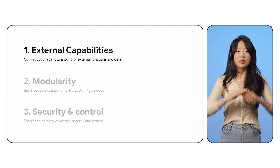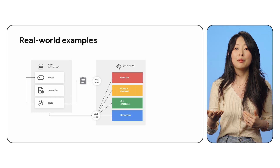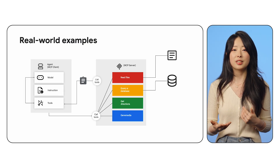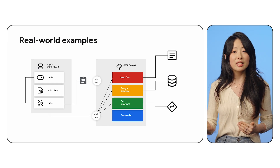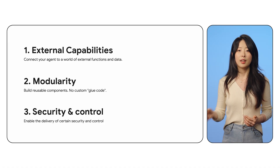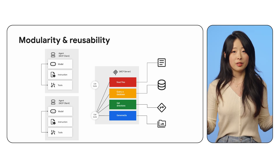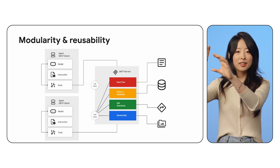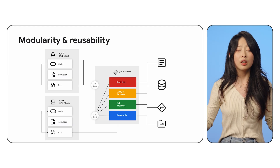Here is what you get with MCP. Firstly, since MCP servers expose tools, your agent can now access huge external capabilities — for example, it can read or write files on a local or remote file system, query a database like BigQuery or MongoDB, connect to real-time directions from Google Maps, or use generative media tools like Imagen for image generation. Secondly, it gives you modularity and reusability. An MCP server can be a standalone service, and any MCP-compliant client, including an ADK agent, can plug in with no custom glue code required — meaning less custom integration code and more reusable components.